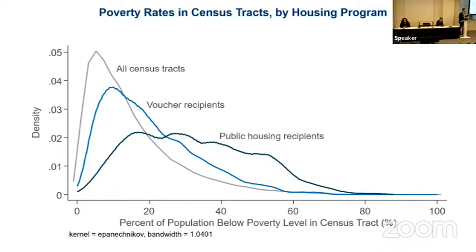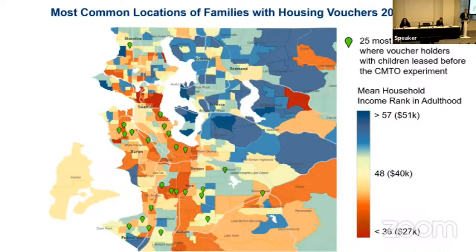The key question that a lot of my work and others have focused on is why voucher recipients don't pick census tracts that are more representative or have higher rates of upward mobility for their kids, better amenities, and so on. Zooming in on Seattle, looking at the top 25 locations where voucher holders reside: each green dot corresponds to one of the 25 most common voucher holder locations. You can see they tend to be concentrated in areas with lower rates of upward mobility for kids. There are very few vouchers being used in Bellevue, Redmond, Kirkland, or the Normandy Park community on the south side — not many vouchers used in those areas.